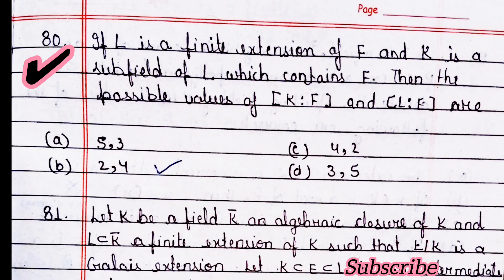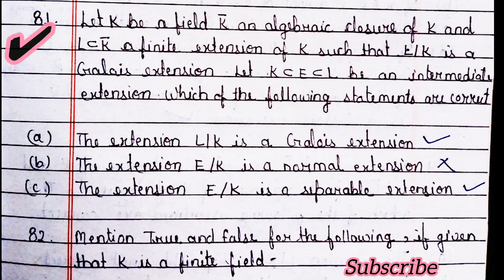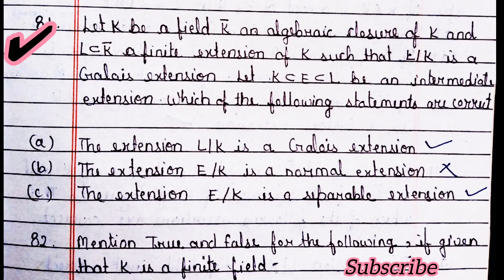Next question: if L is a finite extension of F and K is a subfield of L containing F, then the possible values of [K:F] and [L:F] are — option B is right. Next question: let K be a field, K-bar an algebraic closure of K, and L a finite Galois extension of K. Let K ⊂ E ⊂ L be an intermediate extension. Which statements are correct? — option A and option C are correct; option B is wrong.